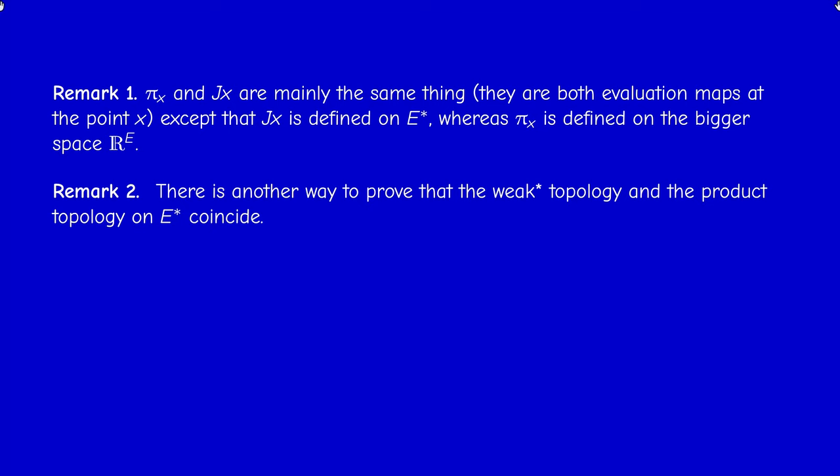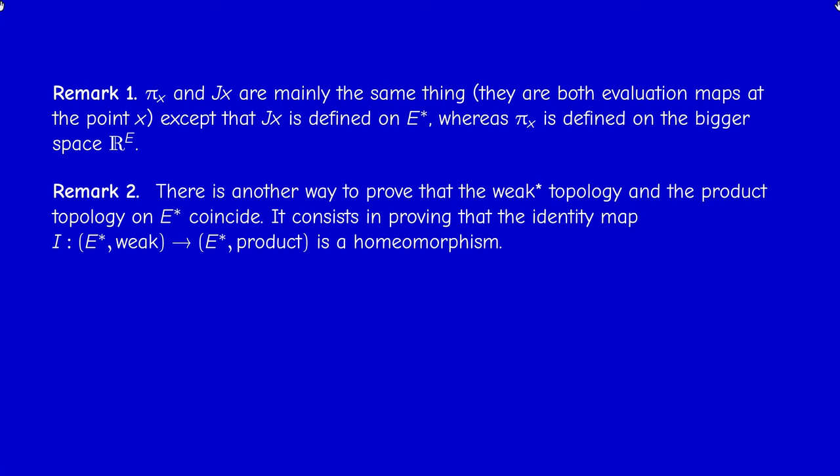A second remark: another way to prove that the subspace topology inherited from the product topology and the weak star topology coincide is via homeomorphism — this is proved in the lecture notes. Note the correction: this should say weak star, not weak.